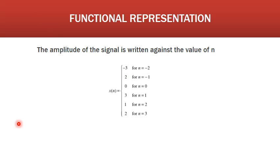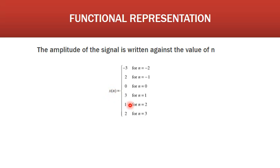Next is functional representation. Any discrete time signal can be represented in the form of functions, where the amplitude of the signal is written against the value of n. Using the same example: x(n) = -3 for n = -2; x(n) = 2 for n = -1; x(n) = 0 for n = 0; x(n) = 3 for n = 1; x(n) = 1 for n = 2; and x(n) = 2 for n = 3. This is the functional representation of discrete time signal.